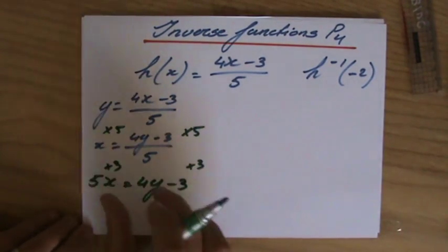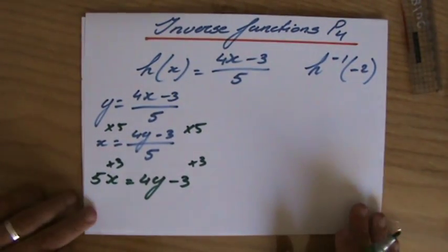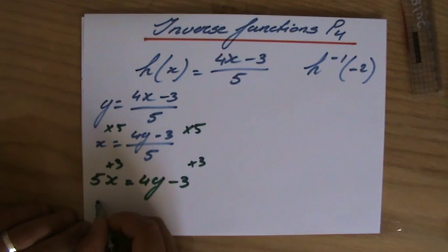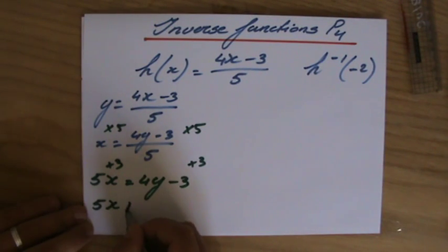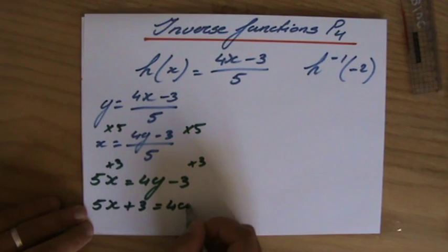For some of you, you say move the minus 3 to the other side. You're actually not moving it, but OK, the sign changes. 5x + 3 = 4y.